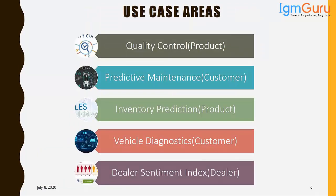One use case is quality control. You can try to understand whether certain parameters of a particular product are reaching a required category. In quality control you have certain measures and a threshold, and you check whether a product meets that quality or not. You can actually perform this exercise using machine learning — automatically build an algorithm to identify whether certain products meet a particular criteria.